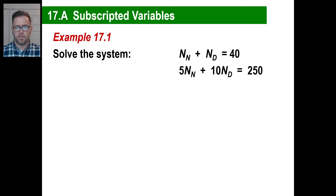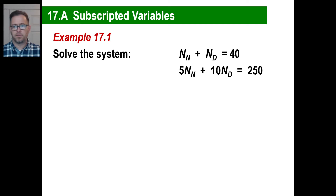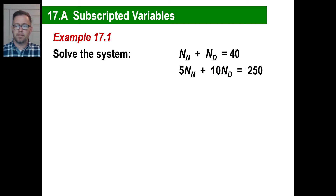In other words, this could be something like: the number of nickels plus the number of dimes was 40. There were 40 dimes and nickels in a pile, and the number of nickels — they're 5 cents apiece — and the number of dimes, which are 10 cents apiece, added up to 250 cents or $2.50. How many of each kind were there?